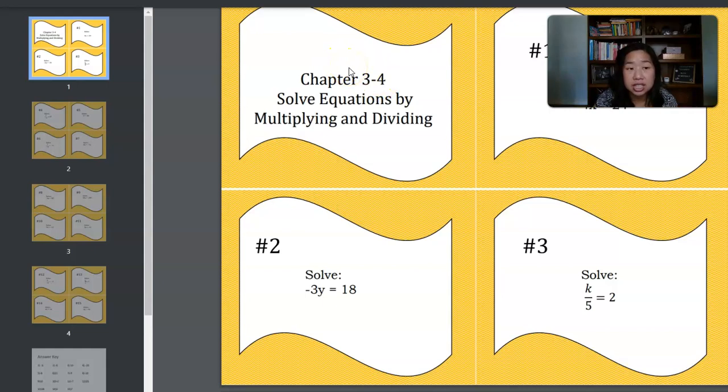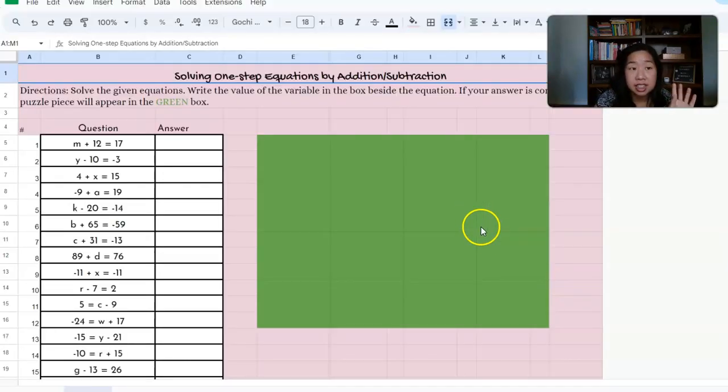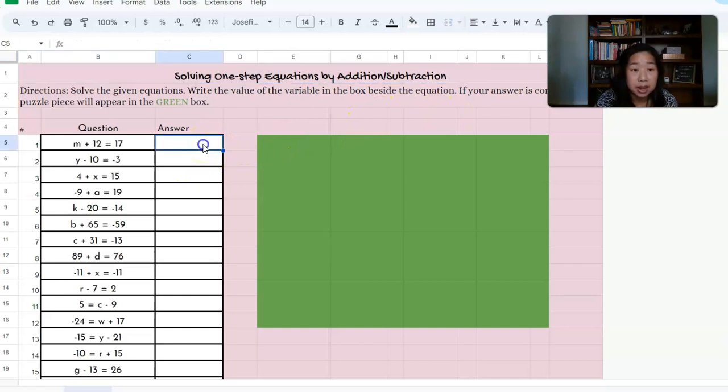The final activity that I want to show you is this which is one of my absolute favorites, it's a mystery puzzle. It says solve the given equation, write the value of the variable inside the box. If your answer is correct the puzzle piece will appear in the green box. Here's how it works: you have m plus 12 equals 17, so I might have my students work it out, show me their work on a separate sheet of paper.